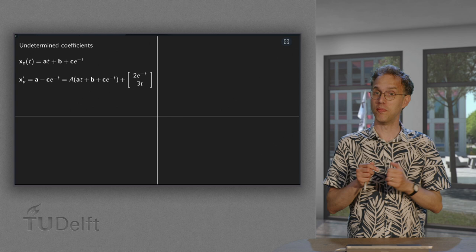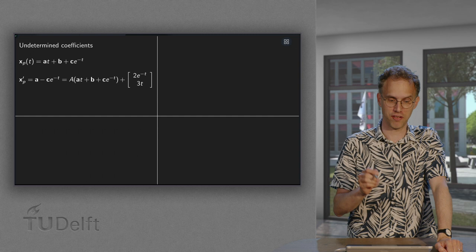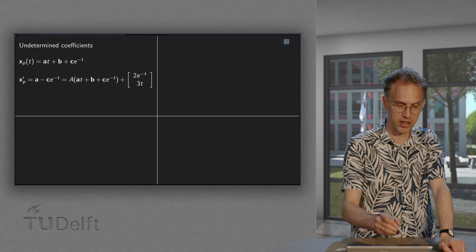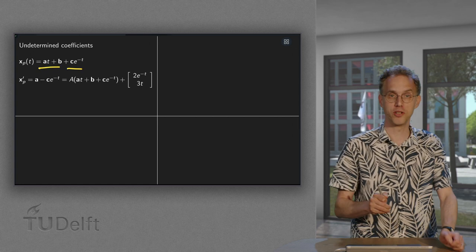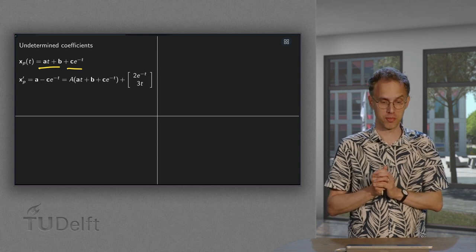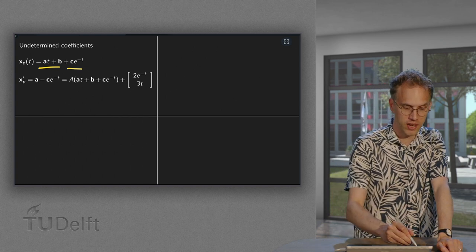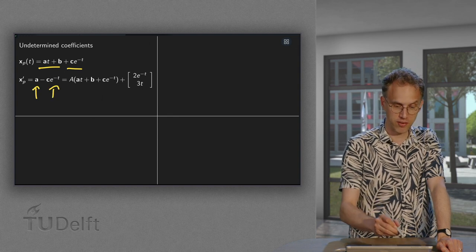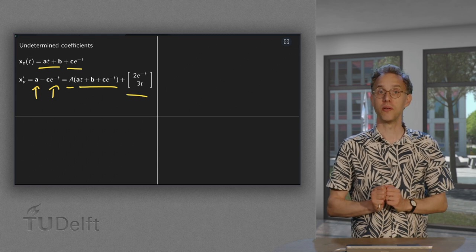What if we would use the method of undetermined coefficients instead? That works really fast. So let's see. Let's take a look at our right hand side. We had something with an e to the power minus t. And we had a t plus b. Just like we saw in the previous example. And we have to determine the vectors c and the vectors a and b. We compute x prime. It gives us an a minus c times e to the power minus t equals a times x particular plus this right hand side. So there we go.